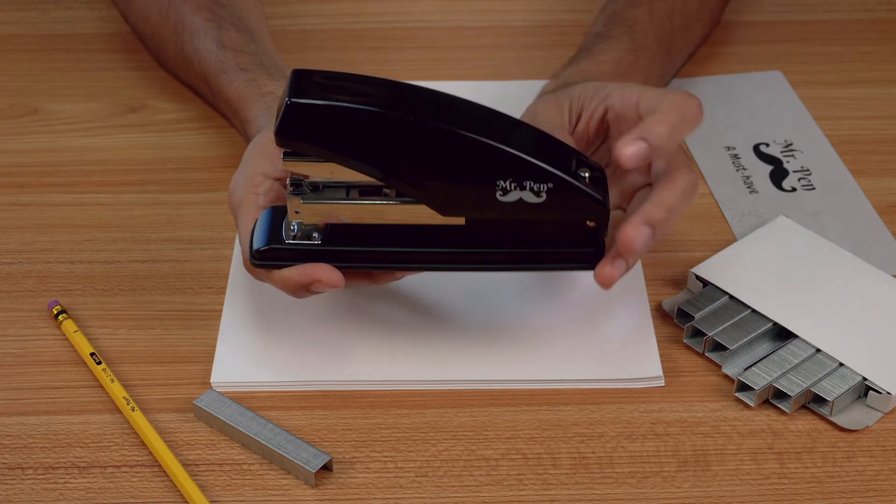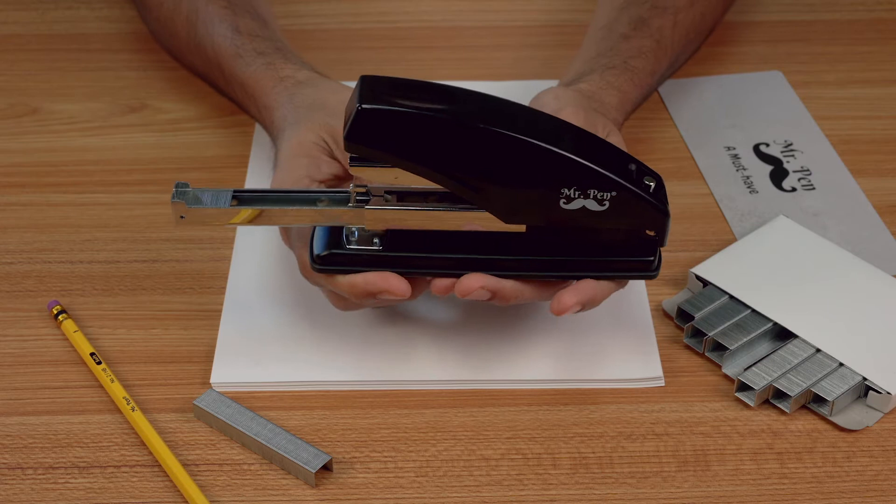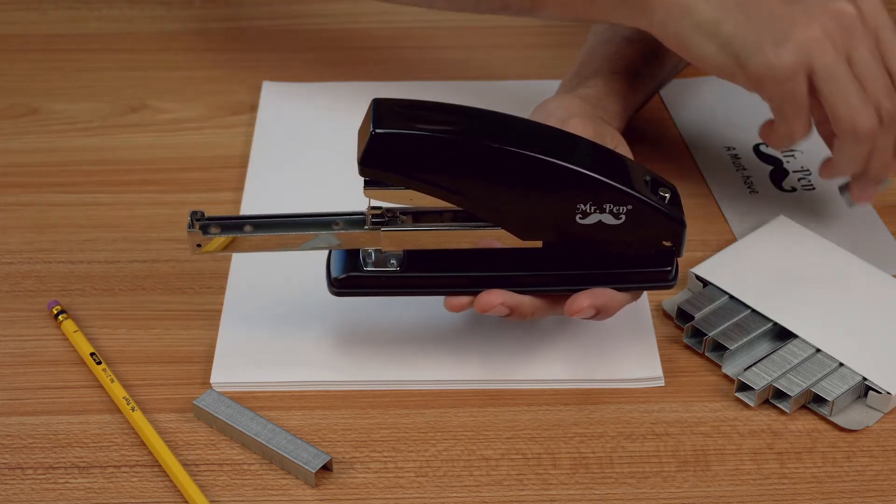It's very easy to load or replace staples onto the machine. First, push the small metal button in the back. This will release the staple feeder.